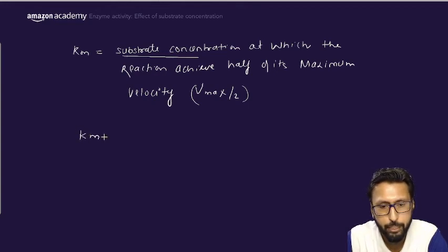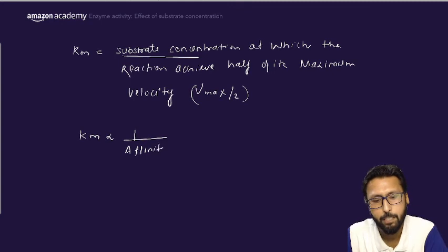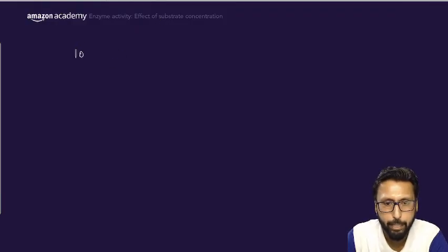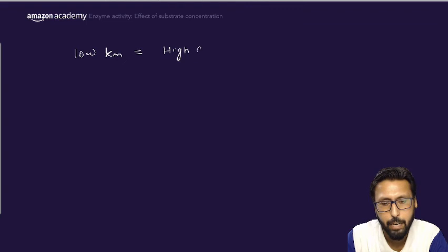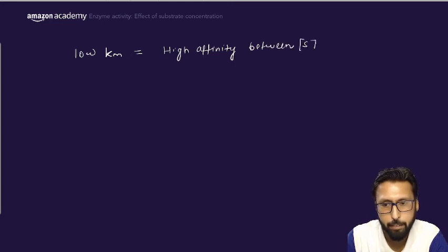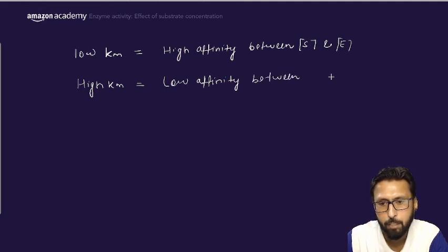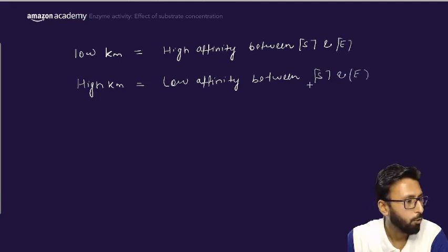Km also indicates affinity — the attraction between substrate and enzyme. If we have a low Km value, that means we have high affinity between substrate and enzyme. If we have a high Km value, we have low affinity between substrate and enzyme.